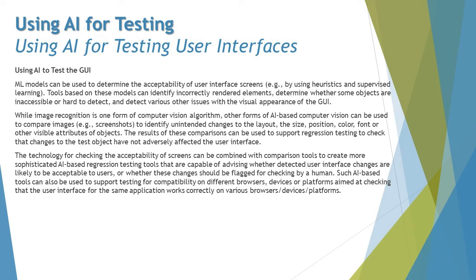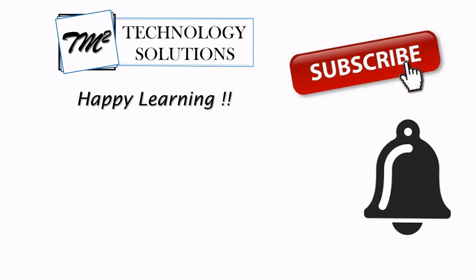AI certainly helps test engineers do better testing within a given time, without cutting the roles of test engineers. Testing teams deal with many challenges when it comes to automation testing and identification of objects and their attributes. AI should be able to detect these objects and minimize the effort required for a tester to identify them or write scripts, but by no means does this imply it will reduce the number of testers in the industry. That's all from this tutorial — we'll be back with sample questions from this chapter to wrap up the entire series. Keep learning, keep exploring, and happy learning!